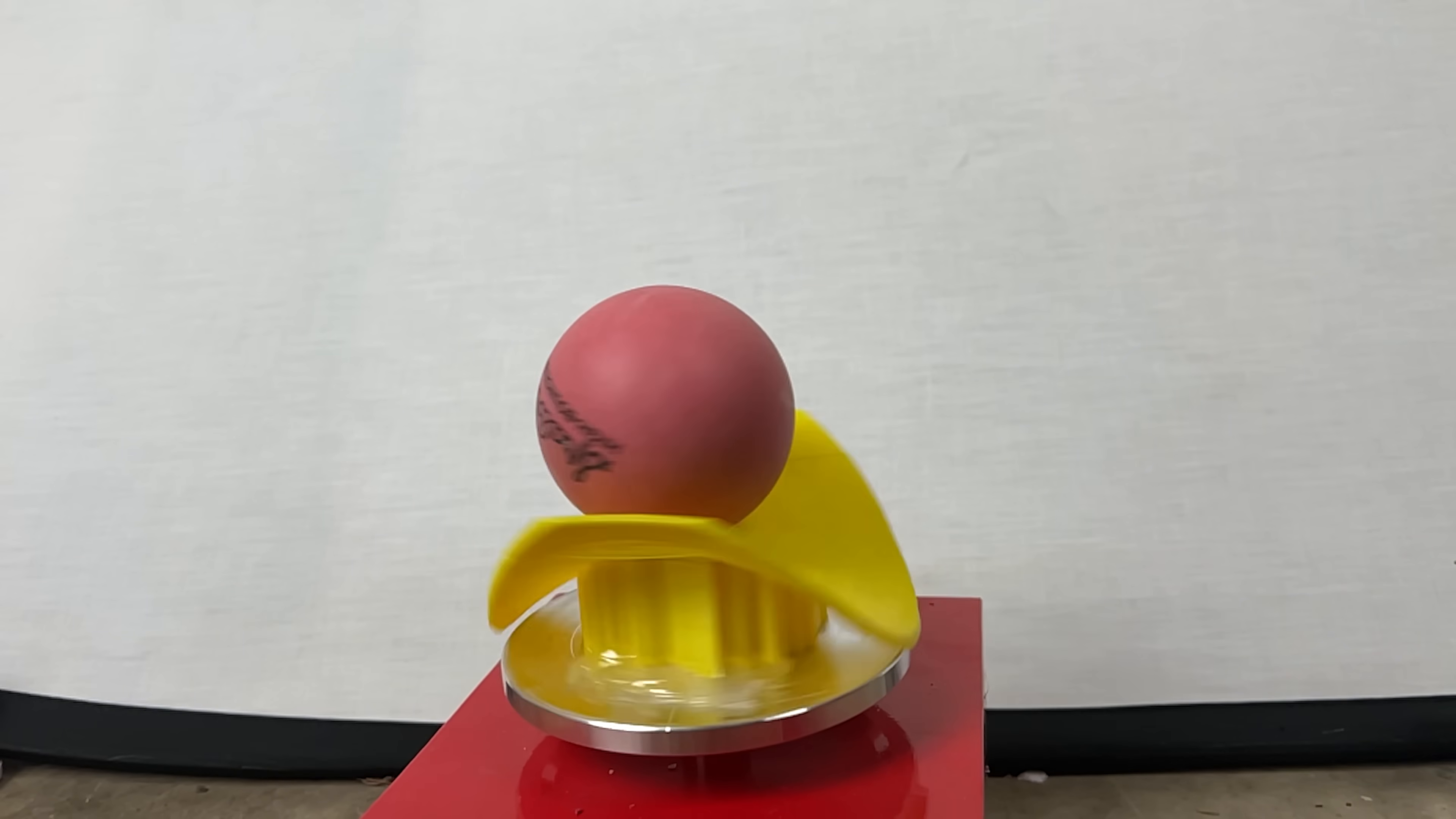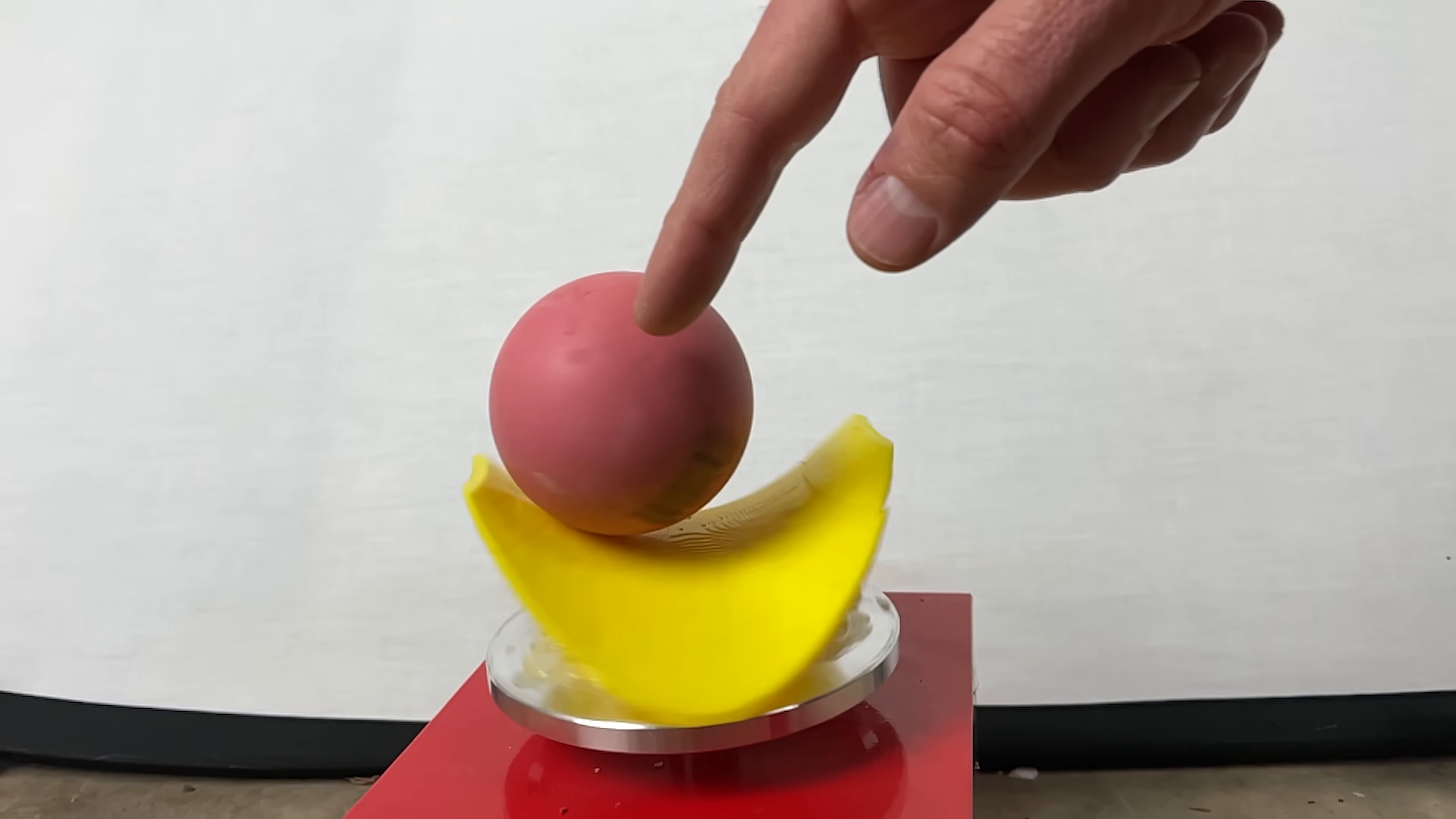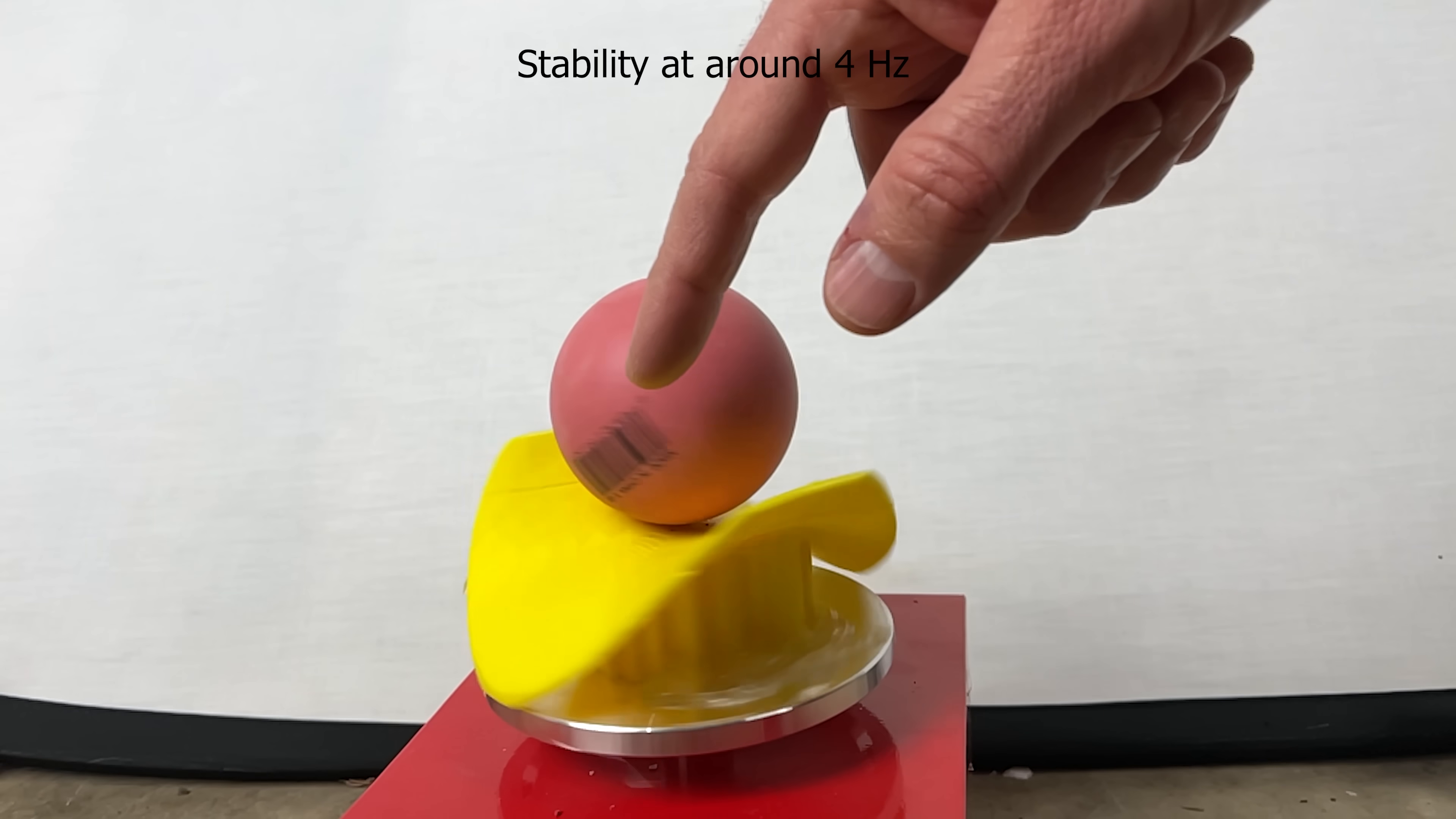So that means if I turn my table at around two hertz or four hertz I should be able to get it to be stable. Finally I got it to be stable at around four hertz. I can even nudge it and it stays stable.